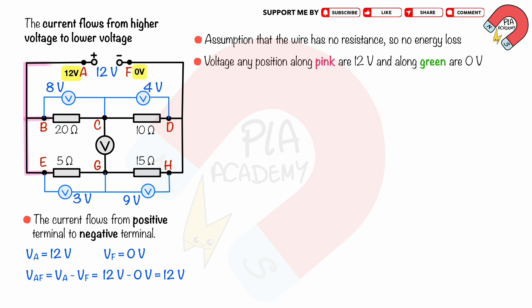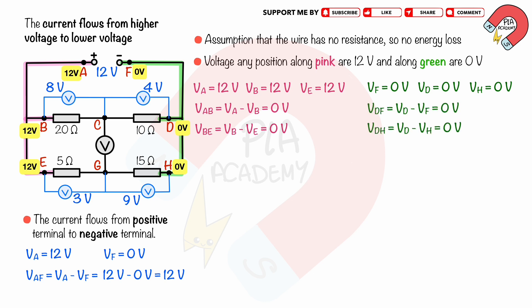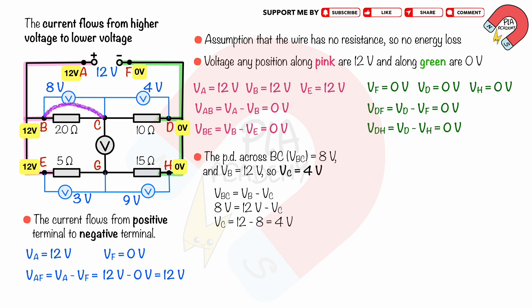The voltage at any point along the pink wire is 12 volts, and the voltage at any point along the green wire is 0 volts. So the voltage at points A, B, B, and E equals 12 volts, causing the PD across AB and BE to equal 0. The voltage at points F, D, and H equals 0, causing the PD across DF and DH to equal 0. The PD across BC equals 8 volts; with voltage at point B equal to 12 volts, the voltage at point C equals 4 volts. The PD across CD equals voltage at C minus voltage at D, which is 4 minus 0, equal to 4 volts.